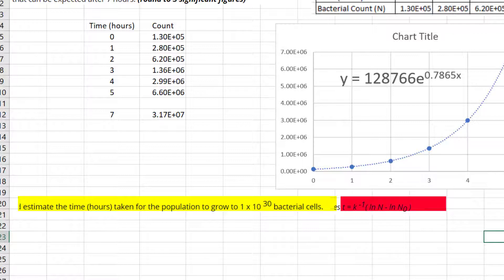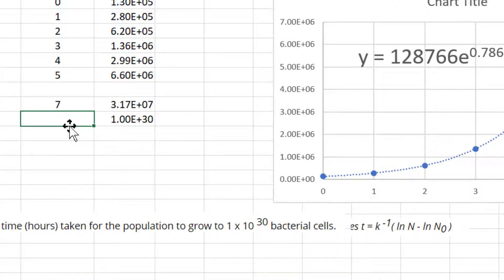We're then asked how long it would take for the population to grow to 1 times 10 to the 30 bacterial cells if the rate of change continues. So entering 1 times 10 to the 30 as the count value, we employ the formula that is marked in red there. It's the natural log of 1e30 minus the natural log of the starting value.